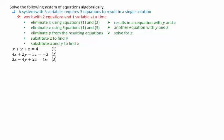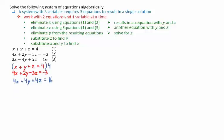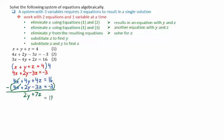First, let's eliminate x using equations 1 and 2. From equation 1: x plus y plus z equals 4. And equation 2: 4x plus 2y minus 3z equals negative 3. If we multiply the first equation by 4, we can then eliminate the x. This gives 4x plus 4y plus 4z equals 16. Subtracting equation 2 cancels out the 4x, leaving us 2y plus 7z equals 19.